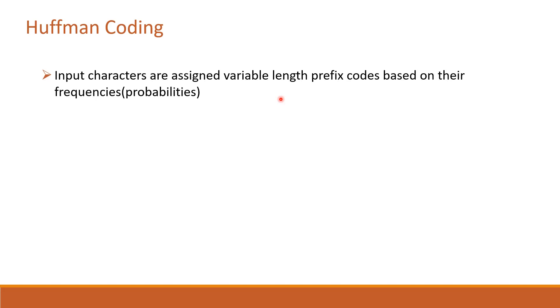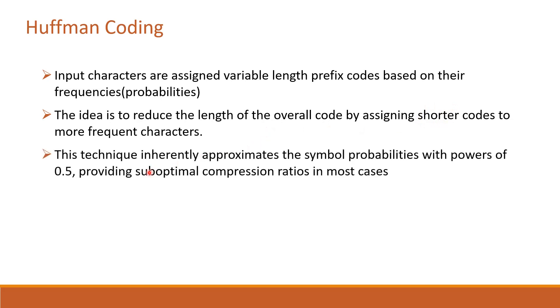Let's brush up some basics of Huffman coding. In Huffman coding, we assign prefix codes to characters of the alphabet according to their probabilities. We assign shorter codes to symbols with high probability, thereby reducing overall length of code. This way of coding approximates the symbol probabilities with powers of 0.5, providing suboptimal compression ratios in most cases.